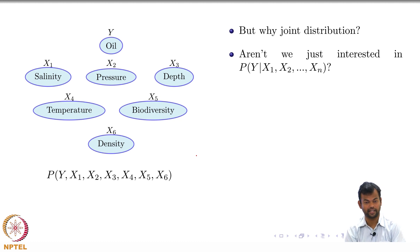I am not asking you to assume anything is independent yet. You could still find P of Y given all these variables without making any independence assumptions. Why do you want to do the joint distribution?